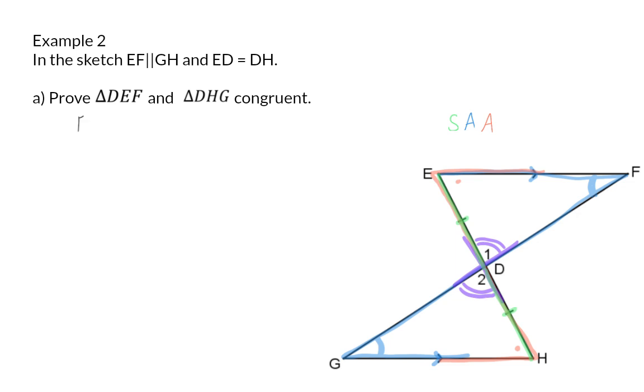Now we can go and write down all our measurements that are equal. In triangle DEF and triangle DHG, we know that ED is the same length as DH, and that was given to us.